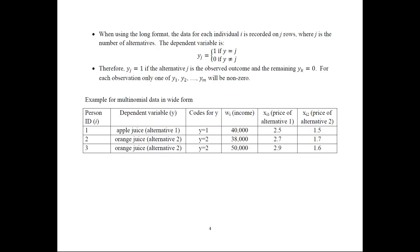I will talk about these alternative-varying variables in more detail later. Notice that prices can differ across individuals — perhaps they went to different grocery stores or live in different cities. But each individual has only one income value, regardless of what product they select. Income doesn't vary depending on what kind of juice they drink.